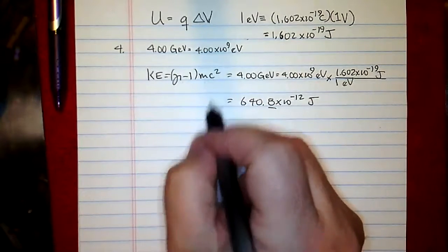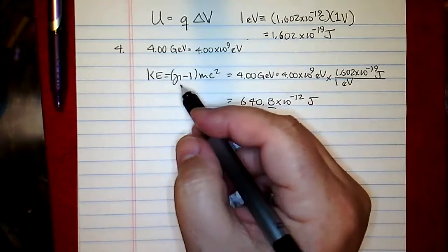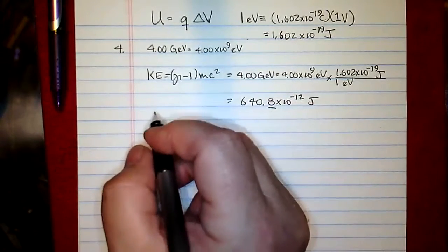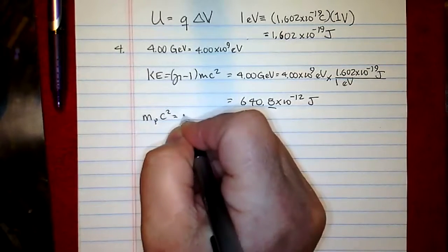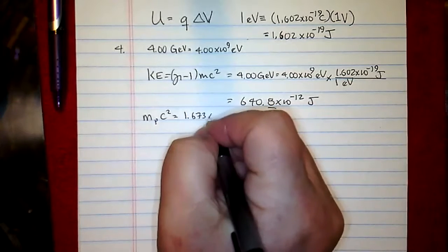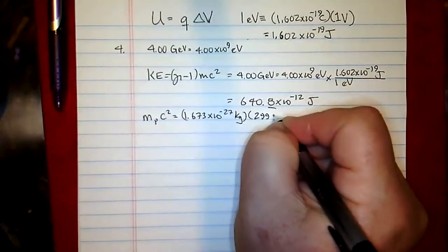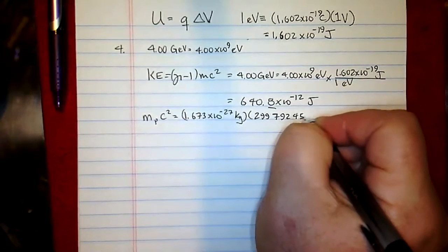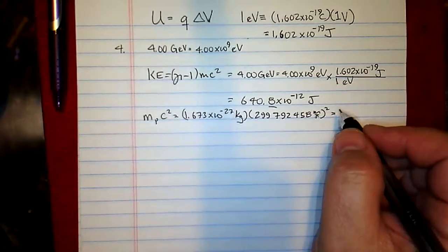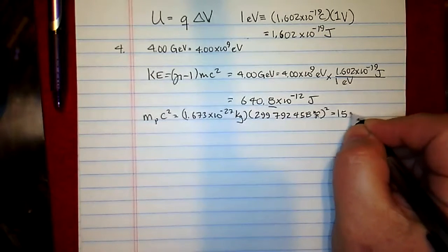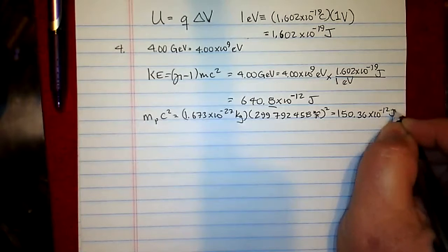Now we also need the rest energy MC squared for the right-hand side. The rest energy is the mass of the proton, 1.673 times 10 to the negative 27 kilograms, times the speed of light squared — using 3.00 times 10 to the eighth meters per second is fine. That calculation gives 150.36 times 10 to the negative 12 joules.